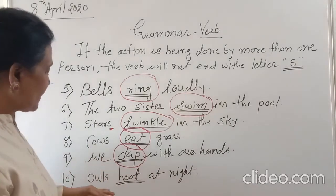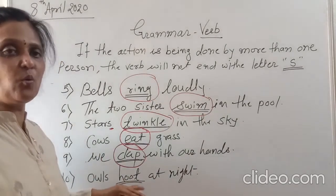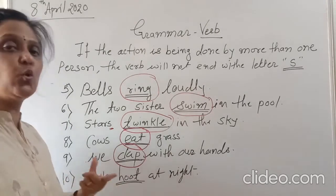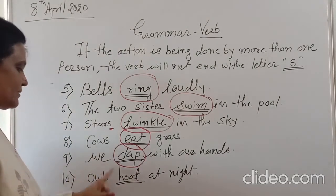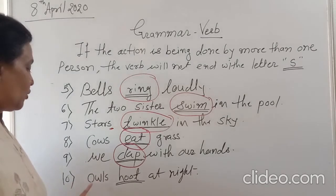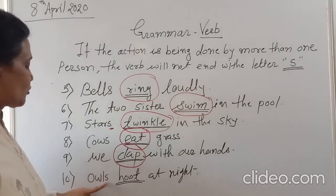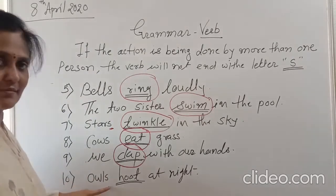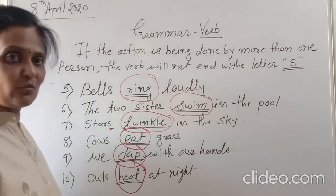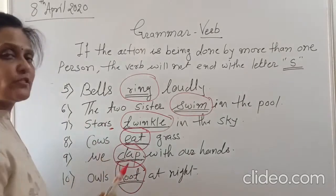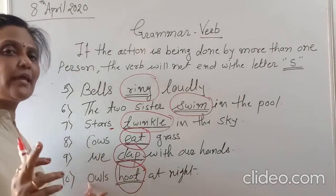Ten: Owls hoot at night. The sound owls make at night is called a hoot. Owls hoot at night. Here is 'owls' — more than one owl. In this noun there is an 's', so it is a plural noun. Owls hoot at night. Hoot is the action word — the verb. We cannot use 's' here with this verb because here are many owls, more than one owl.